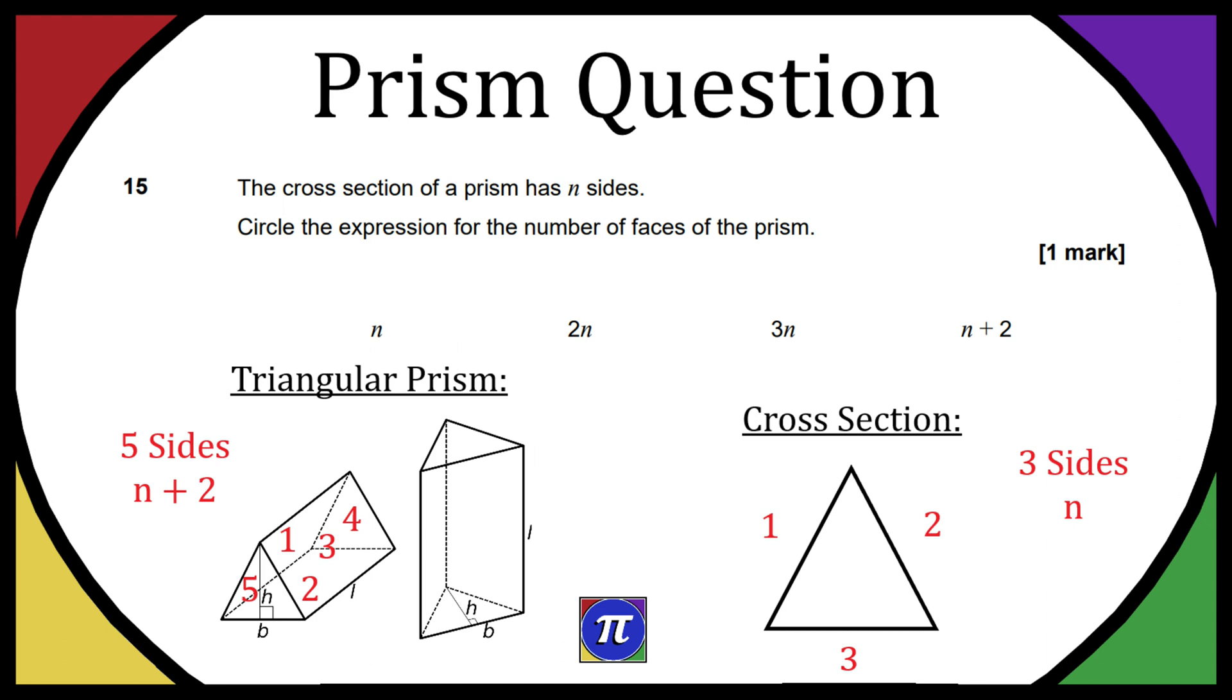If n is equal to 3, then the number of faces on the prism is just going to be n plus 2 because the difference between 5 and 3 is 2. So the answer is going to be n plus 2.